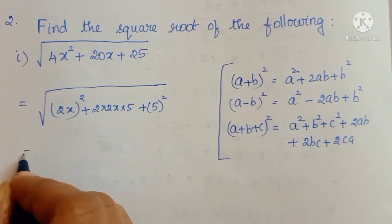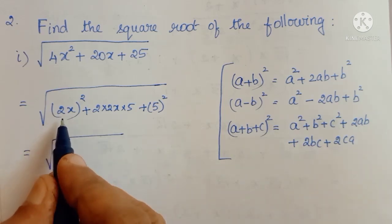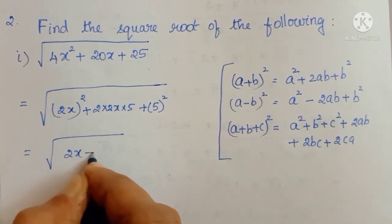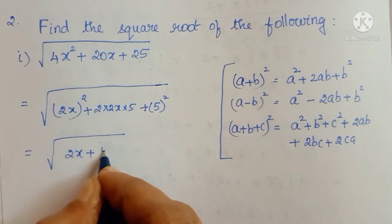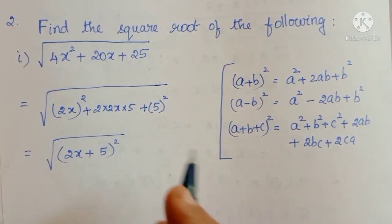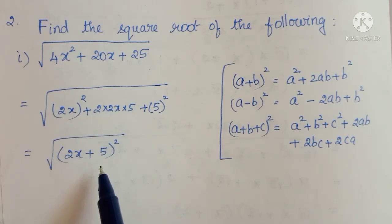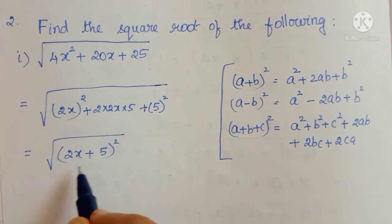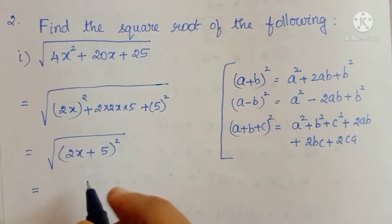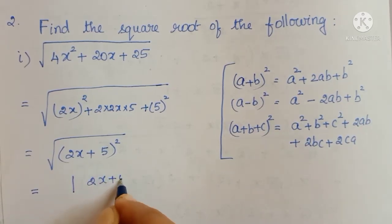Now this expression is in the form of a squared plus 2ab plus b squared, so that is equal to a plus b, whole squared. In this sum, a equals 2x and b equals 5. So we get 2x plus 5, whole squared. Now the given polynomial is written in the perfect square formula, and easily we can write the square root value as modulus of 2x plus 5.